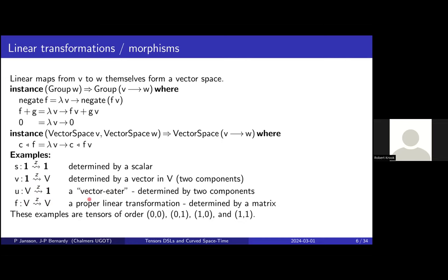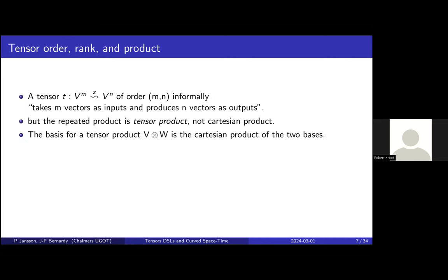In terminology, the order of a tensor is like its type: the number of V copies on the left and V copies on the right. Zero-zero is a scalar, one-zero is a covector, zero-one is a vector, and one-one is a linear map. Sometimes you just sum the two numbers and say it's a second-order tensor if it has one plus one, or two Vs on either side.